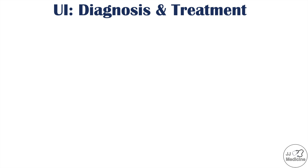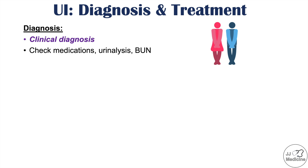Now, how are each of these diagnosed and treated? Clinicians often diagnose urinary incontinence by clinical diagnosis — taking a detailed history, reviewing the types of symptoms the patient describes, and checking for relevant risk factors. It is also important to check medications that could be contributing to urinary incontinence, and to check urinalysis for signs of a UTI. Blood urea nitrogen can also be measured.